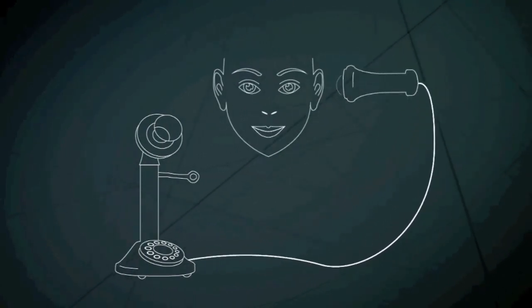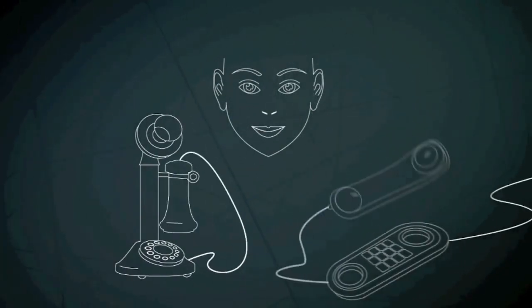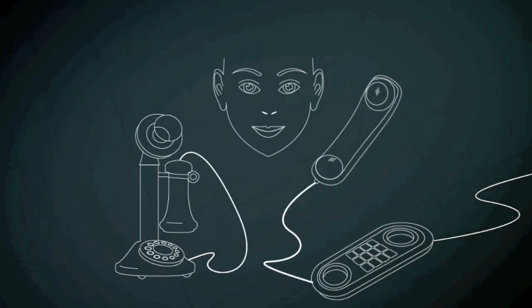Telephones consist of a loudspeaker through which you hear the caller and a microphone to pick up your voice when you answer. In the earliest phones, these elements were separated. Now they are joined in one handset.